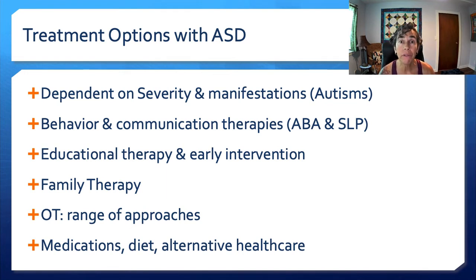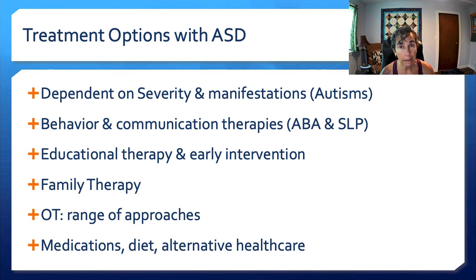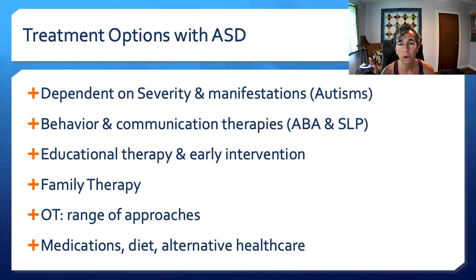Families will come to us and ask what we think about the newest, latest, greatest alternative approach. What I say is: first, be sure the treatment is safe — if it's unsafe, we need to share that information. If it is safe to try, the family is in charge and needs to be aware of the potential benefits, potential risks, and the fact that nothing might happen. It could be a small time investment or a very substantial one. We weigh all of those factors.